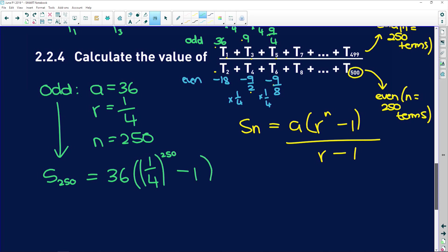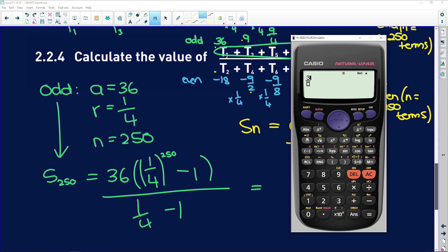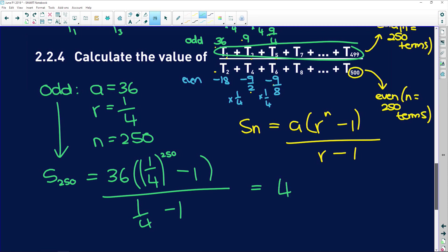All over a quarter minus 1. So that's going to give us this whole sum here in the numerator. So if I get my calculator up, I'm going to have 36 into a quarter to the power of 250 minus 1, all over again, a quarter minus 1. And that is going to give me 48. So this entire numerator is 48.